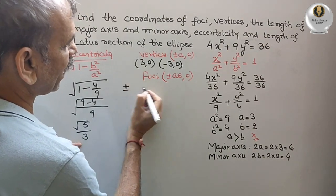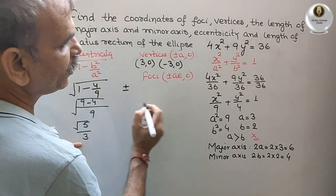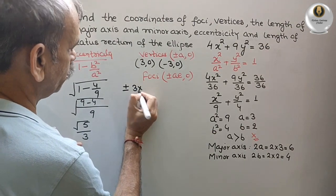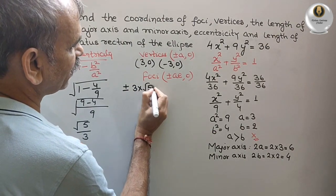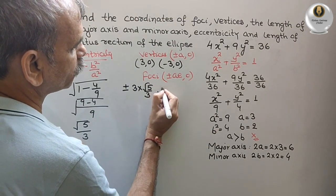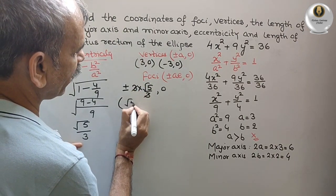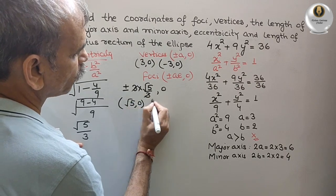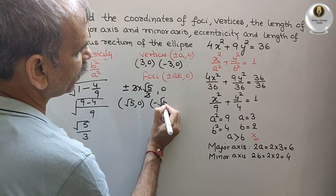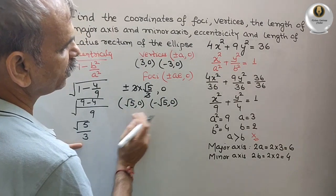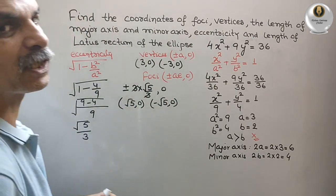We will get (±a). a is 3 into √5/3 is your e, 0. 3 and 3 cancel. Therefore, you will get (√5, 0) and (-√5, 0). So these are your focus coordinates.